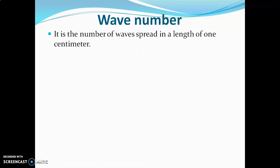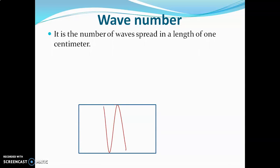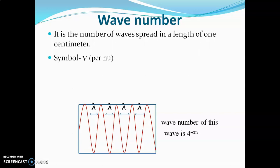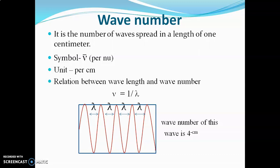The third property is wave number. It is defined as the number of waves spread in a length of one centimeter. For example, if four wavelength units are present in a one-centimeter span, the wave number of that wave is four per centimeter. Wave number is denoted by nu-bar, and its unit is per centimeter. The relation between wavelength and wave number is inverse: wave number equals one upon wavelength, so wavelength and wave number are inversely related.